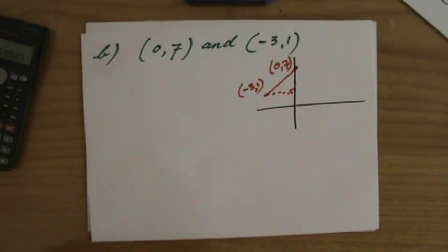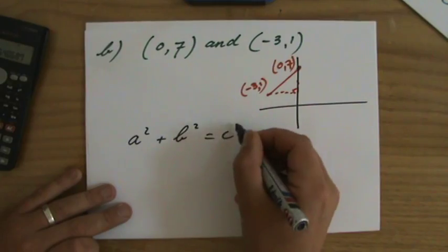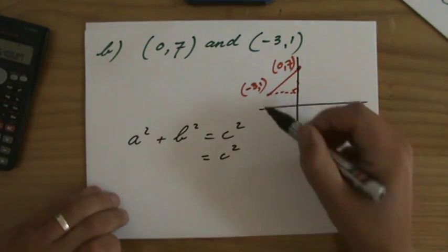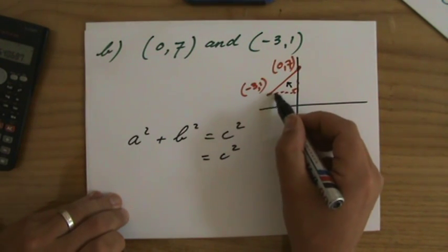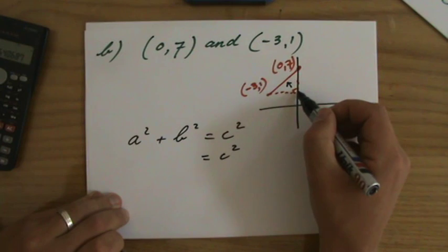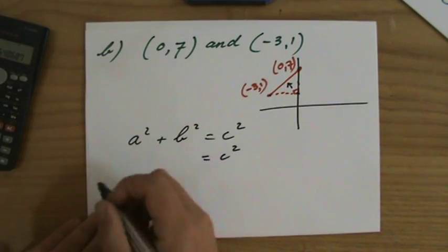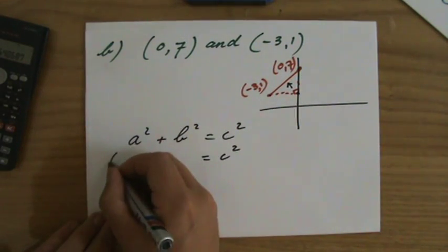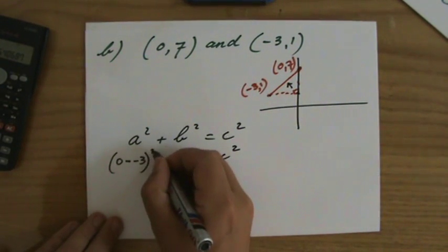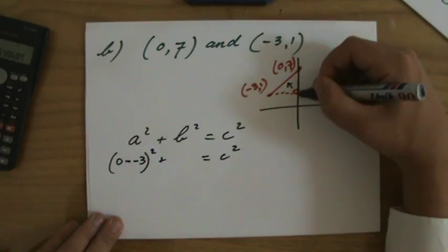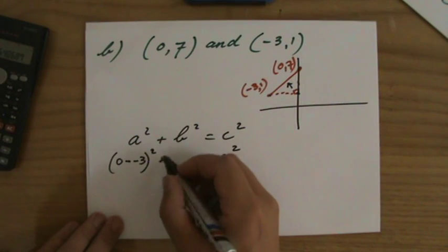Pythagoras: a squared plus b squared equals c squared. And c, the hypotenuse, that is the length we're looking for, across the 90 degree angle. What is the length of this one? Well it's 0 here, -3 there, so that is a length of 3. That is 0, the x-coordinate here, minus -3 squared. Plus what is the vertical length? It's 7 over here and 1 there, so that length is 6, which is 7 minus 1.